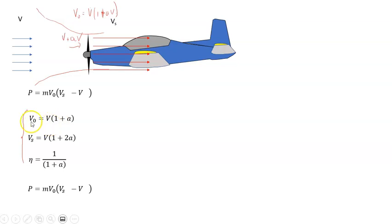If I take V₀ and rearrange the equation, I can get a value for V. I'm going to put that value for V into Vs, so Vs becomes V₀/(1 + a) × (1 + 2a). I've substituted this value for V.